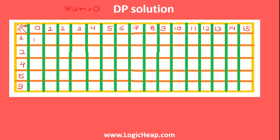Since I want to use a DP solution, I will create a table where we will store the solutions of subproblems, so that eventually we can have the solution of the main problem. Each column represents a subproblem — the smallest subproblem is sum 0, then 1, then 2, up to 15. Each row represents the integers we have: the first row represents having only integer 1, the second row represents having integers 1 and 2, the third row represents having 1, 2, and 4, and so on.